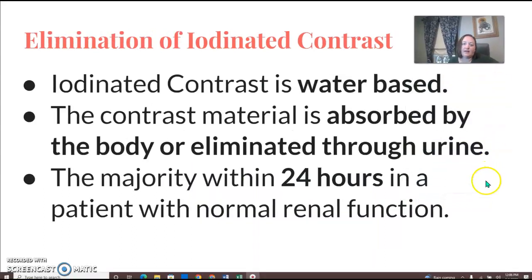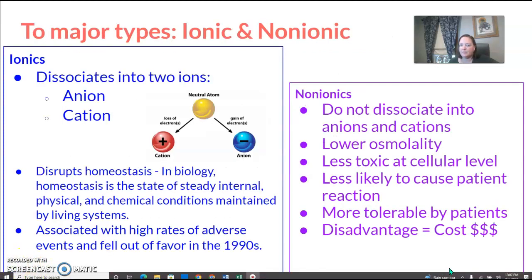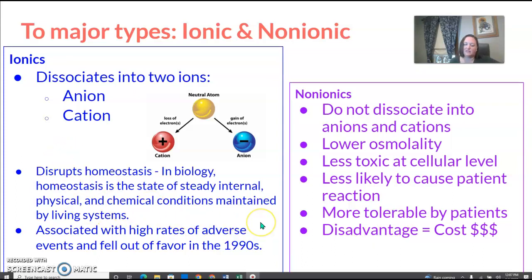The elimination of iodinated contrast: it's water-based, so the body can absorb it and eliminate it through urine, and the majority is eliminated within 24 hours. There are two main types: ionic and non-ionic. Ionic dissociates into two ions; non-ionics don't. Non-ionics have lower osmolarity, are less toxic, less likely to cause a patient reaction, and more tolerable to patients, but they cost more. Ionic contrast is associated with high rates of adverse effects and fell out of favor in the 1990s.